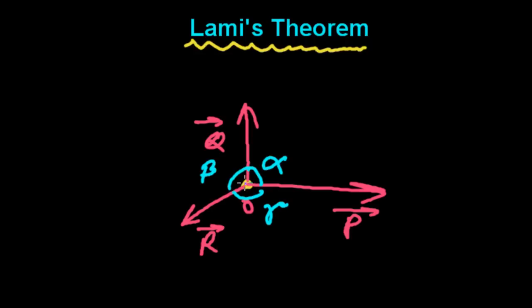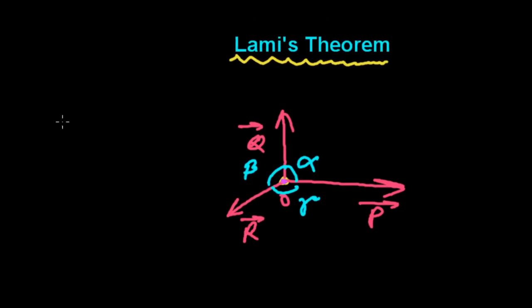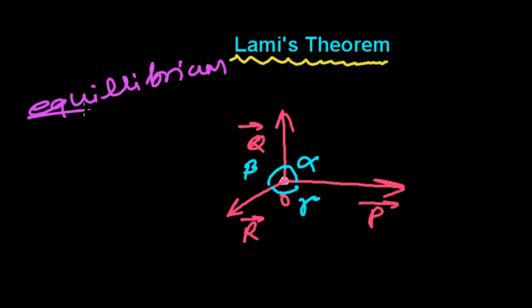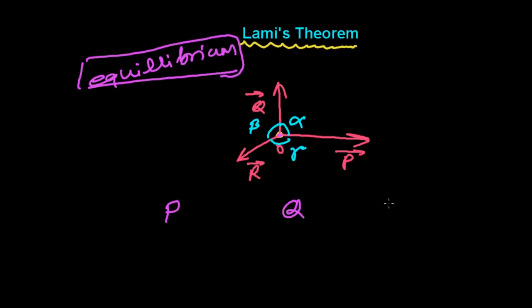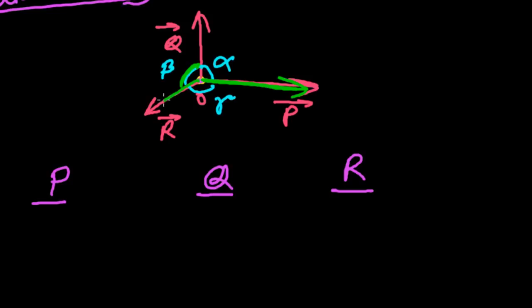and the angle opposite to Q is gamma. Now Lami's theorem says that if these three forces acting at a point are in equilibrium, then each force — P, Q, or R — is proportional to the sine of the angle opposite to that force. So force P is proportional to sine of beta,